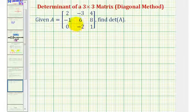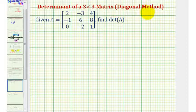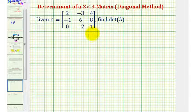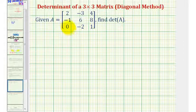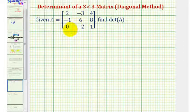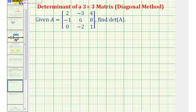Welcome back for a second example of finding a determinant of a three by three matrix using the diagonal method. To set up the diagonal method, we want to form a three by five arrangement of elements using the elements from matrix A. The first three columns of the three by five arrangement will be the same as matrix A.